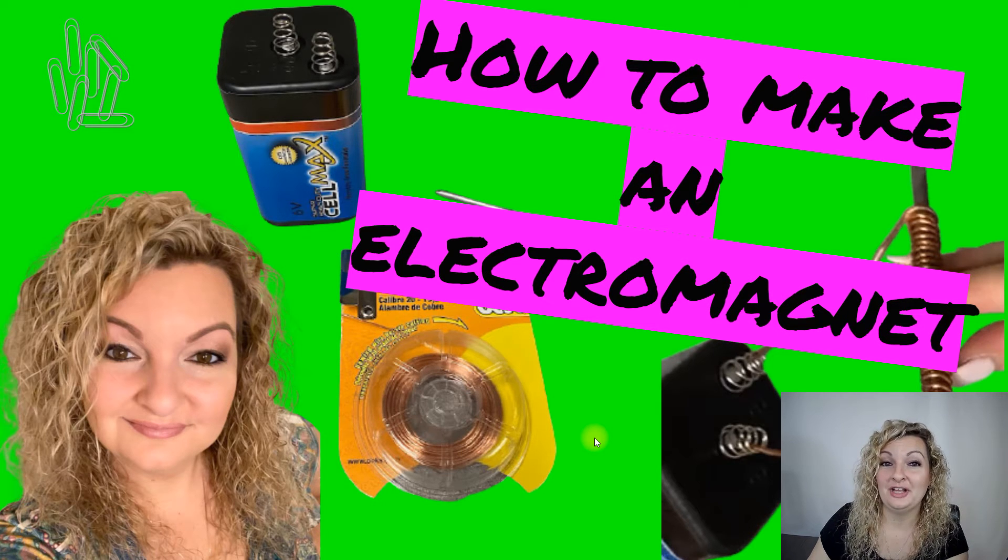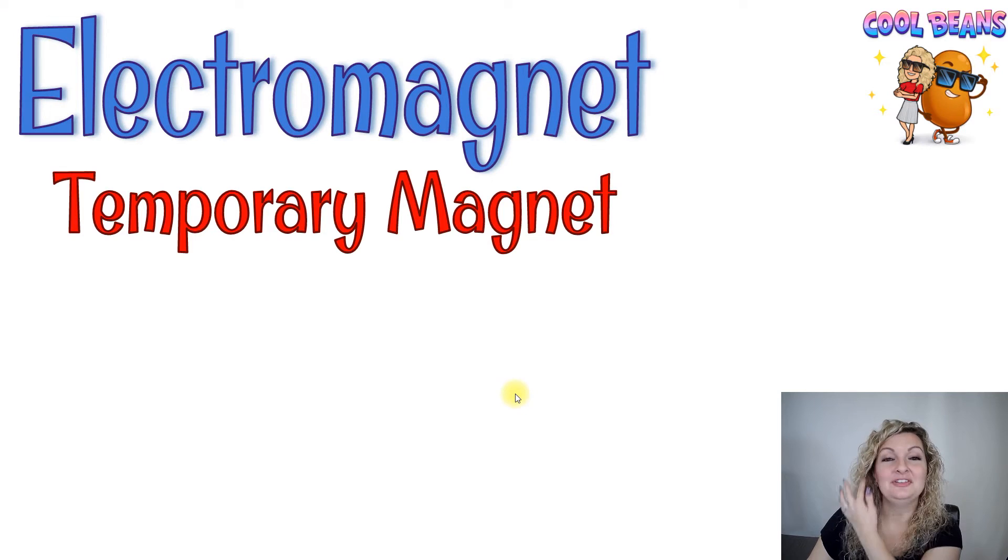Let's talk first about what an electromagnet is. An electromagnet is really just a temporary magnet. In other words, we can turn this on and off.